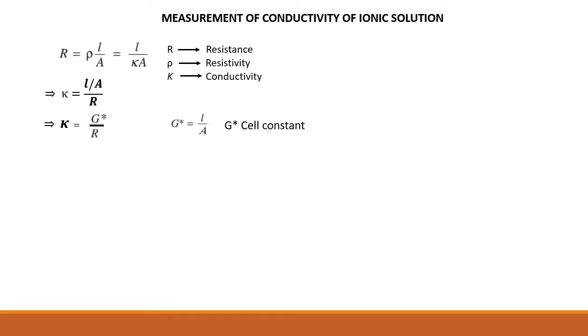So we can see that kappa equals z-star divided by R. Here z-star is the cell constant and R is the resistance measured from electrolysis.